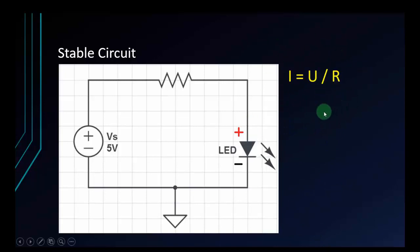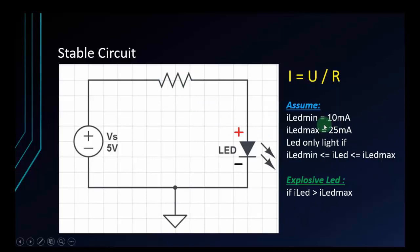This is Ohm's Law. I is U divided by R. How can we know which variables are appropriate with the resistor? I assume like this: the current mean is 10, the current max is 25. LED only lights if the current mean is lower than the current of the circuit and lower than the current max. But pay attention - if the current of LED is greater than the current of LED max, your circuit will be burned or explosive.